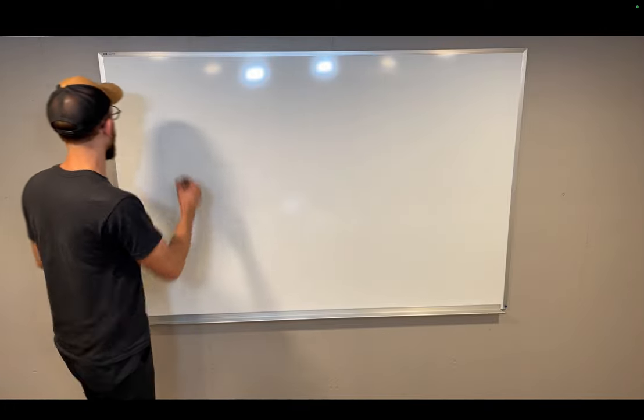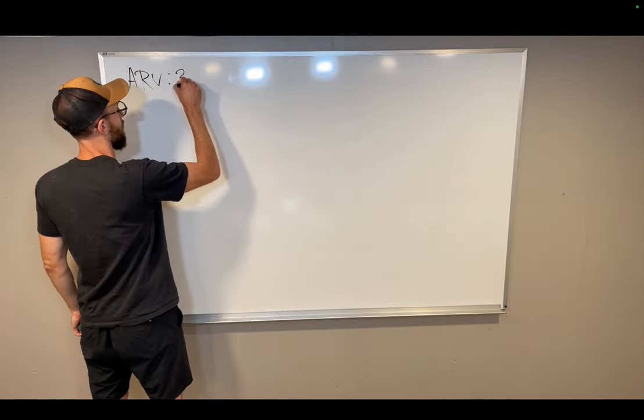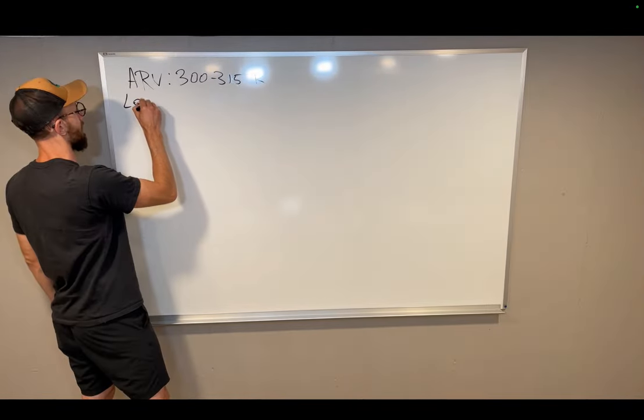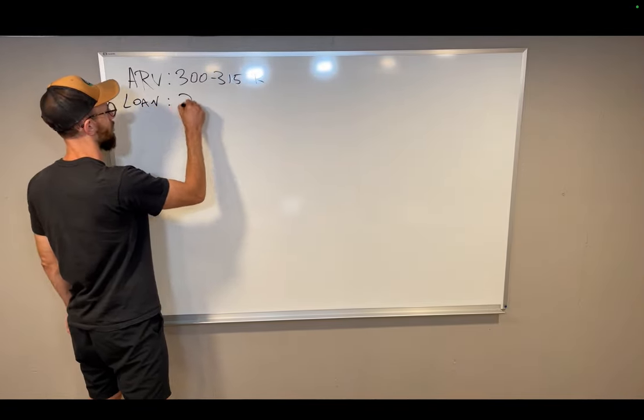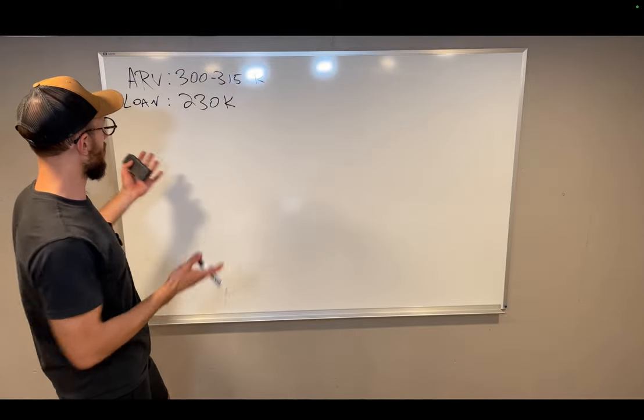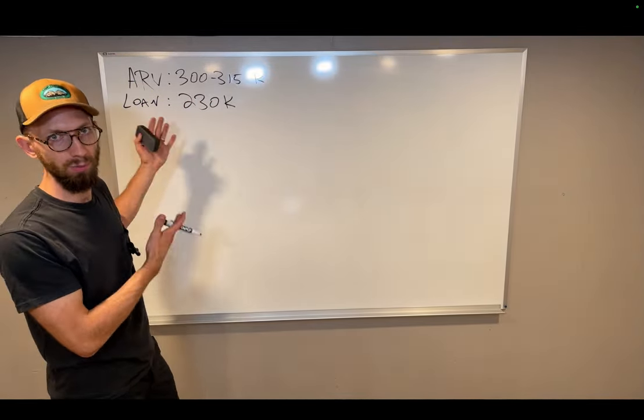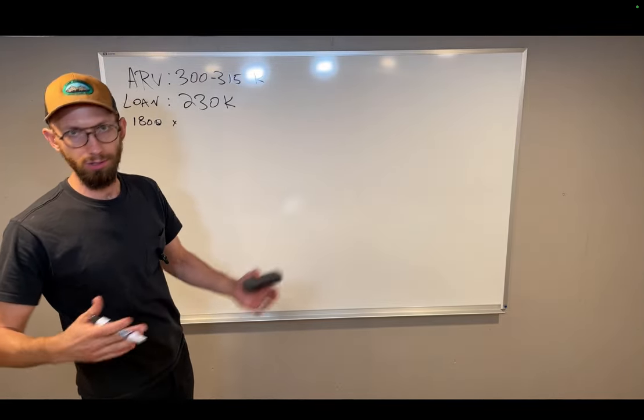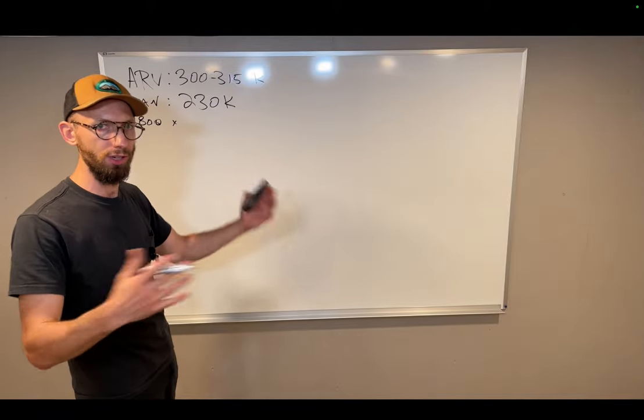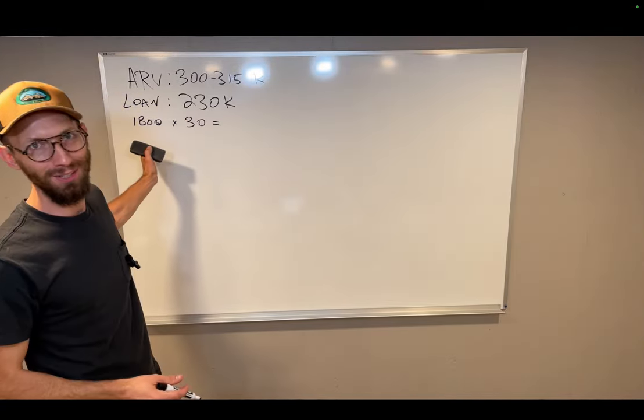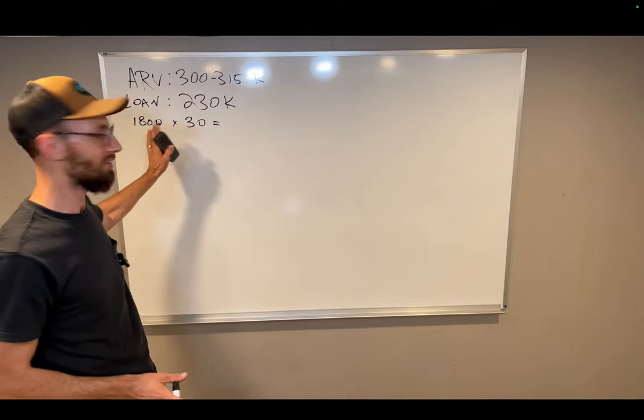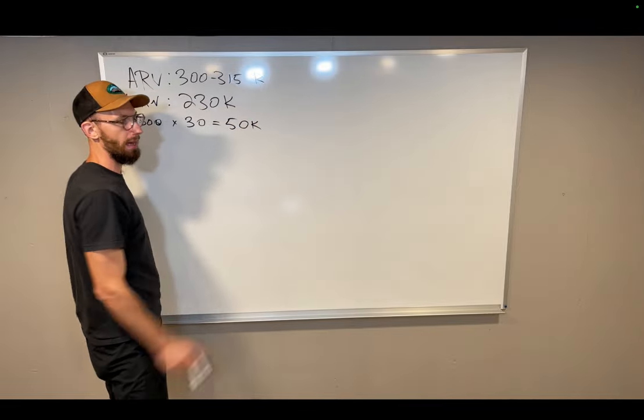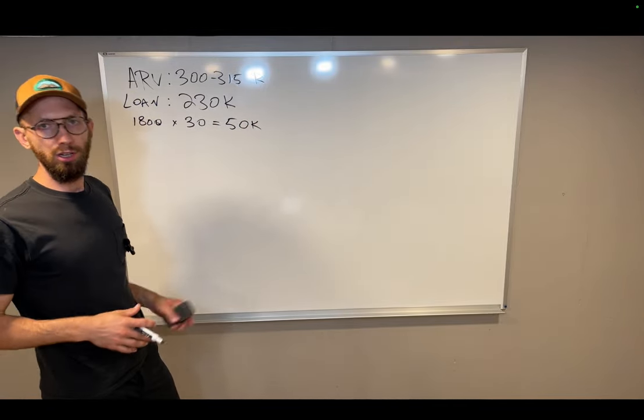Let's get into the numbers. This property had an ARV of roughly $300,000 to maybe $315,000. Now the loan balance was $230,000. It was really a cosmetic rehab. This was 1,800 square feet. If you're just kind of going to do a quick and dirty carpet paint rehab, maybe you're looking at $30 a square foot or so. This is not how you run numbers on a rehab, but just doing a quick and dirty analysis here, you were looking at about a $50,000 rehab just to get this thing looking really good for the market.